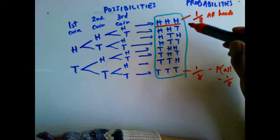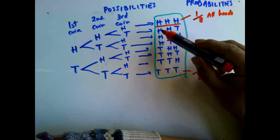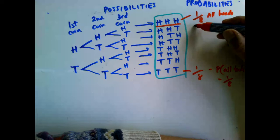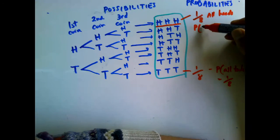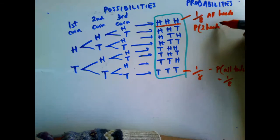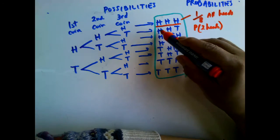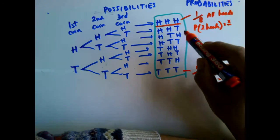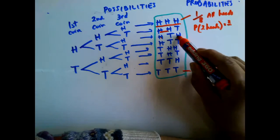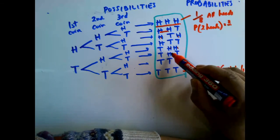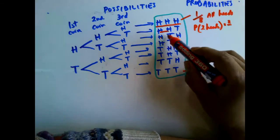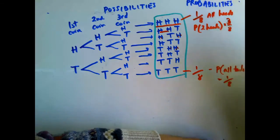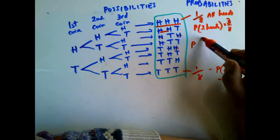The probability that there will be two heads — let's count: one, two, three — so it's three out of eight.